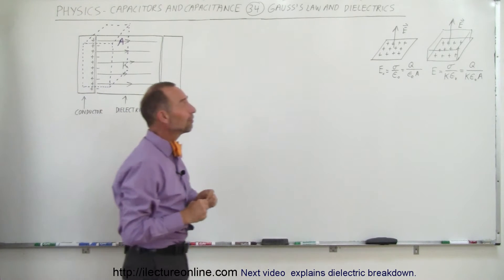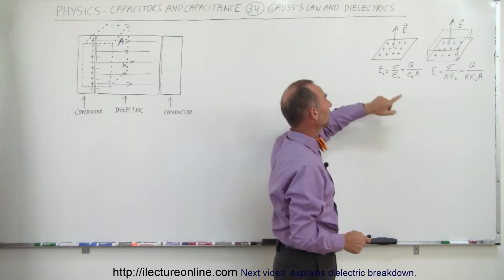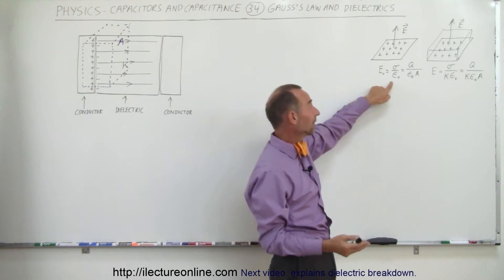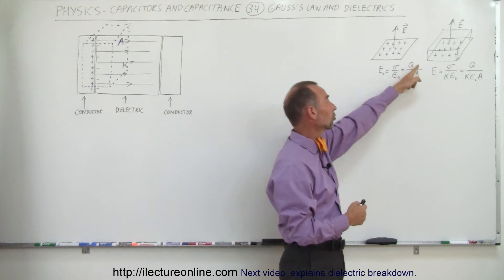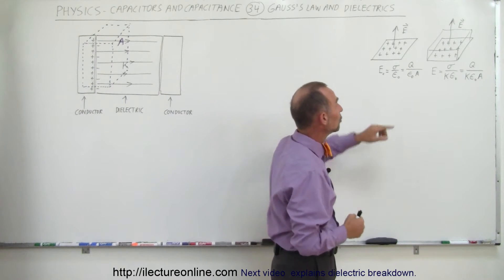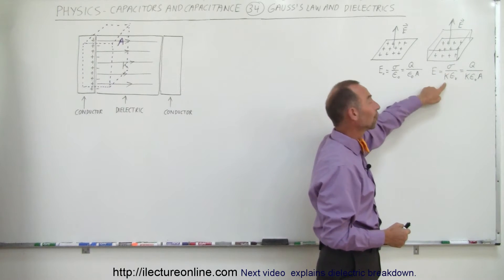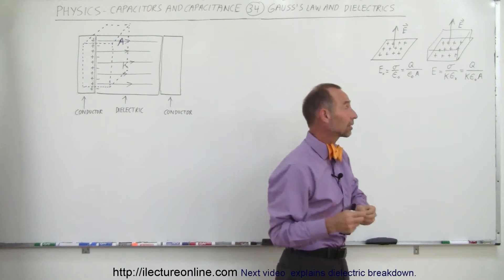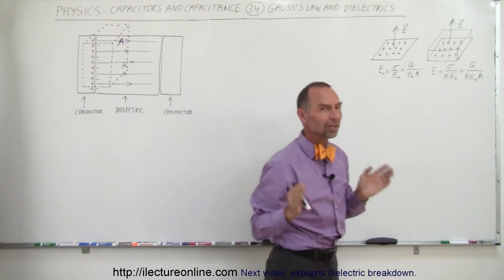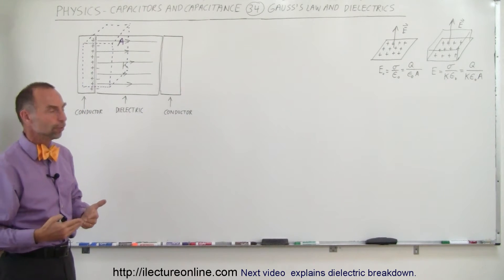We already saw in previous videos that the electric field next to a capacitor plate can be calculated by taking the charge density divided by epsilon sub-naught if there's no dielectric — that is the charge per unit area times one over epsilon sub-naught. With a dielectric, the electric field strength is diminished by one over k, k being the dielectric constant. So let's see if with Gauss's law we can come to the same conclusion.